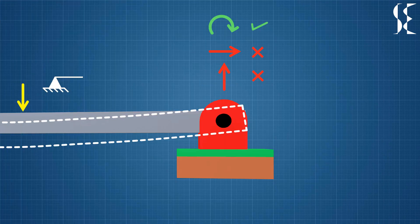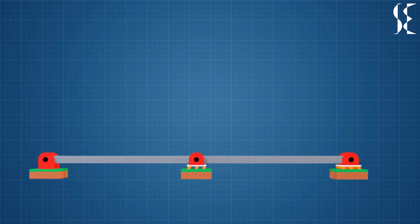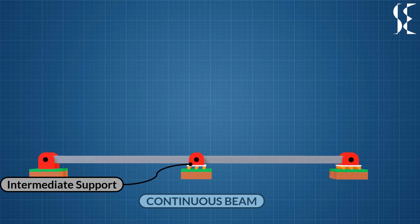So will the pin support or roller support always allow rotation? The answer is not necessarily. If the roller or pin support act as intermediate support in continuous beam, then it will resist the rotation.